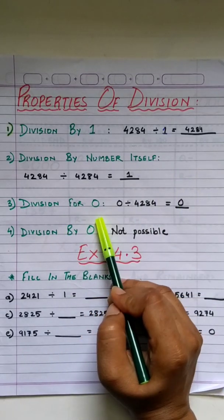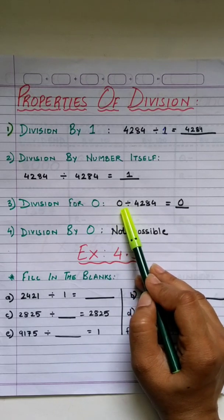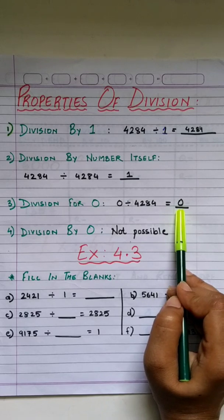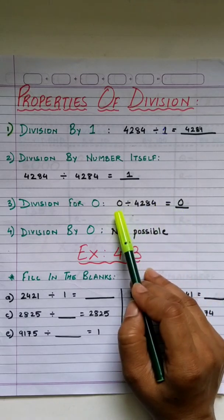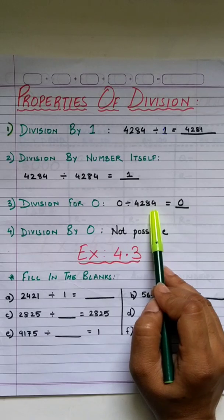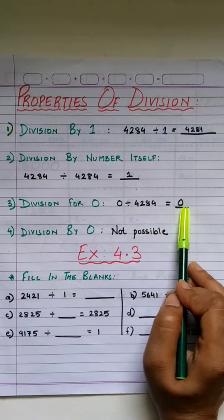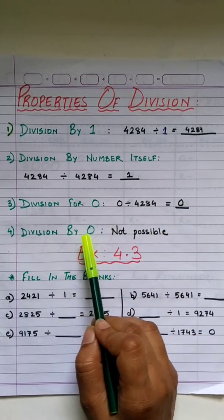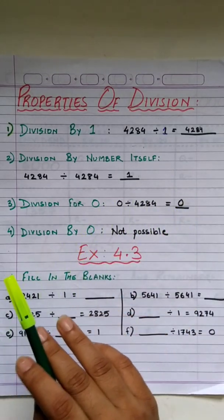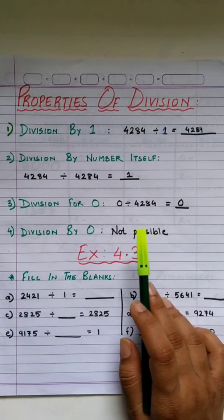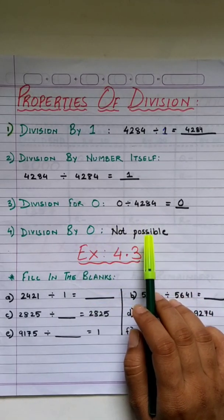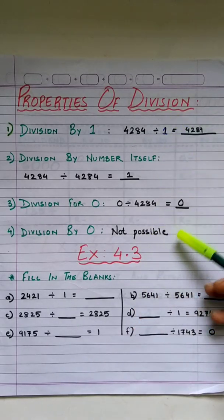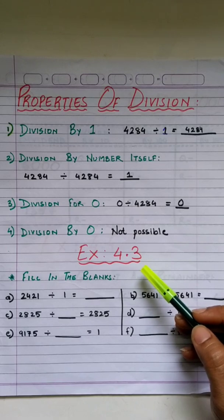Division by 0 is also a property. On the basis of these properties, let us start solving exercise 4.3.